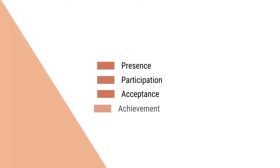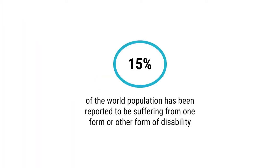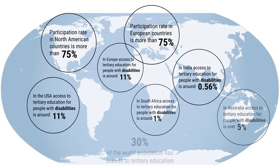Access to inclusive education is based upon four principles: presence, participation, acceptance, and achievement. 15% of people across the world suffer from one form or another form of disability. Some people are born with disabilities and some people get disabled due to factors beyond their control. The percentage of people with disabilities going for higher education is very negligible.